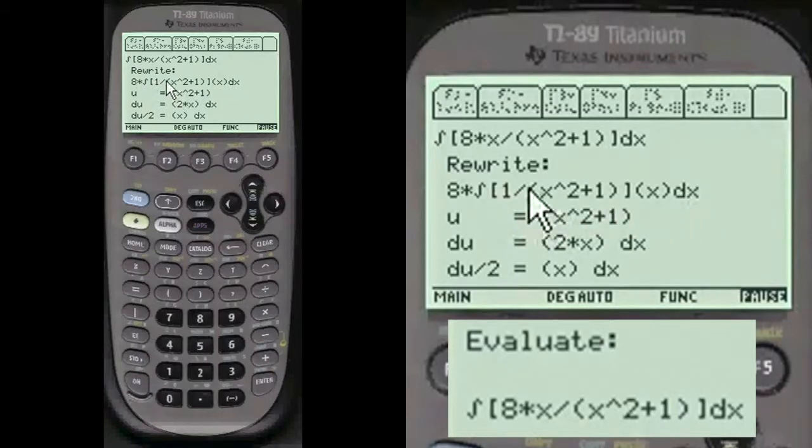And we're going to put 1 in the numerator for x squared plus 1 in the denominator. So u is x squared plus 1. The derivative of that is 2x.